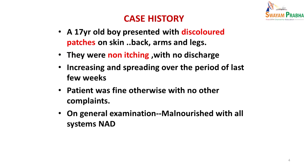There was a patient, a 17-year-old boy, who presented with discolored patches on the skin of his back, arms and legs. These patches were not causing any problem as such — they were just a cosmetic problem — but he saw that they were progressing, starting over a small area and spreading over the last few weeks. They were non-itching, there was no discharge, just a different color than the rest of the skin.